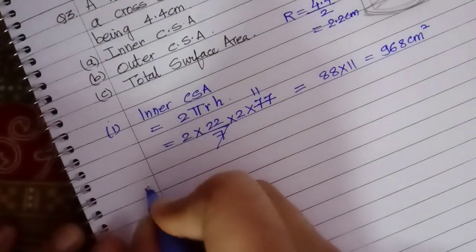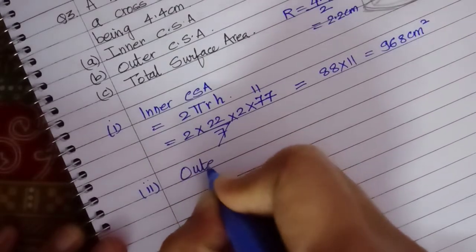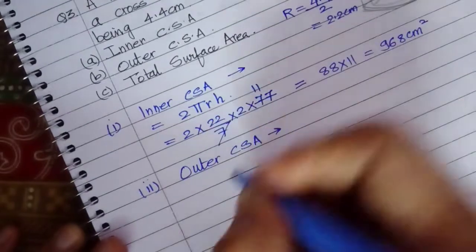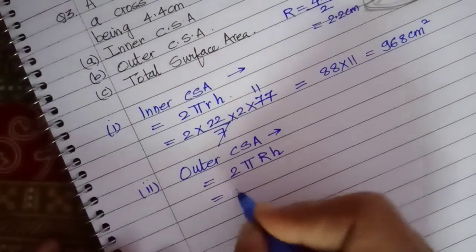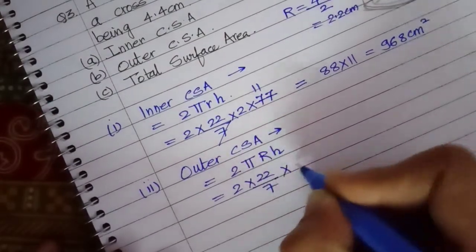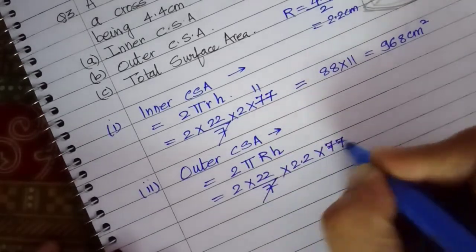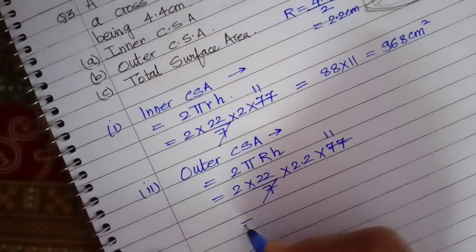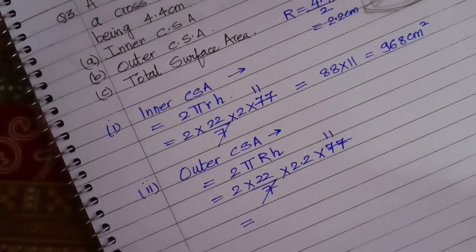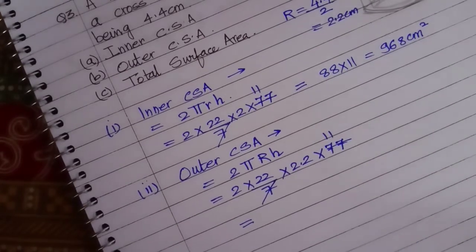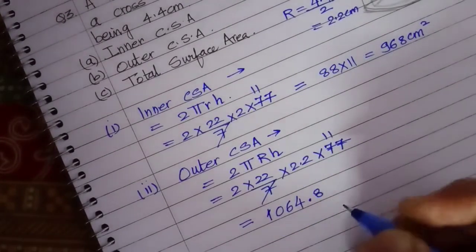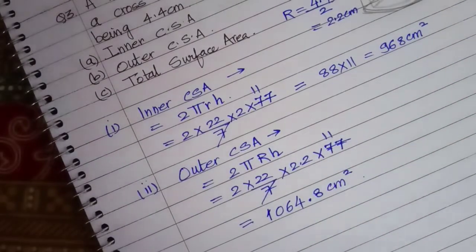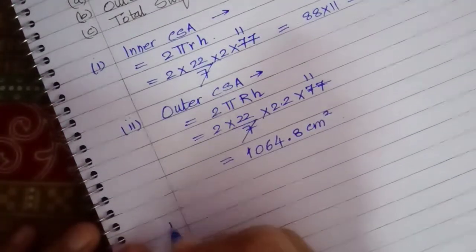Now, second part. Outer curved surface area. That will be 2π capital RH. 2 into 22 by 7 into 2.2 into 77. If I multiply this, 44 into 2.2 into 11 is equals to 1064.8 centimeter square. Now, third part.